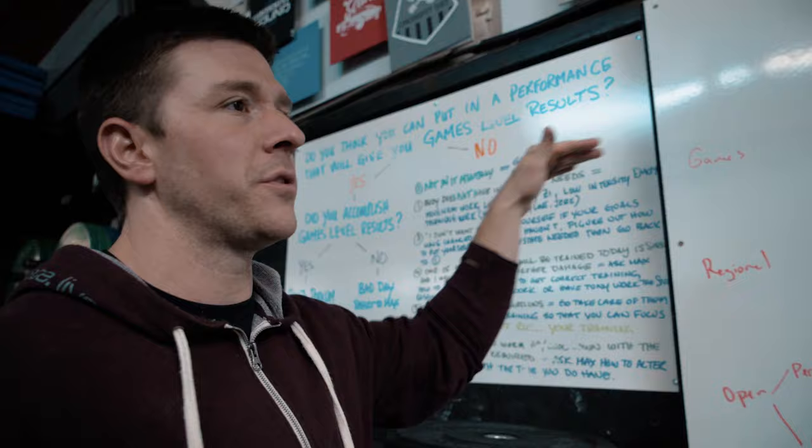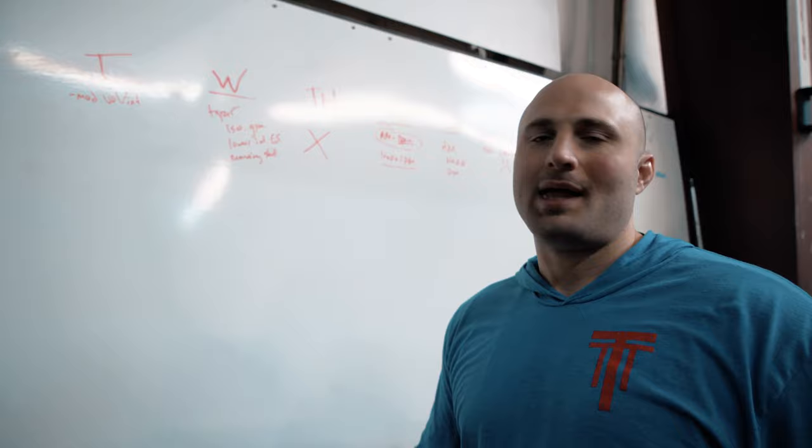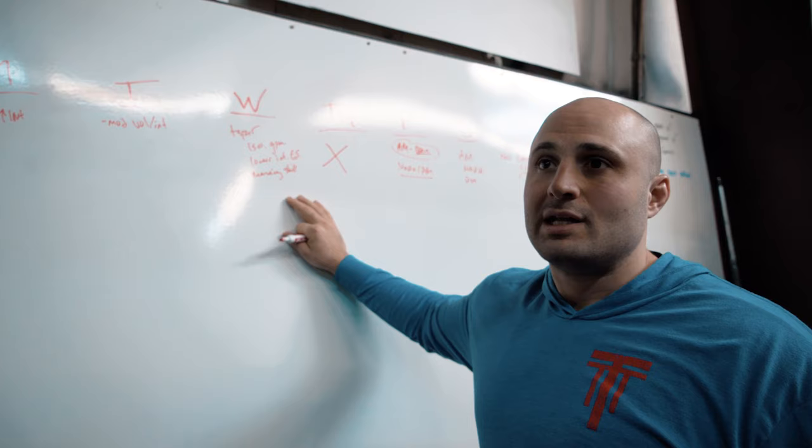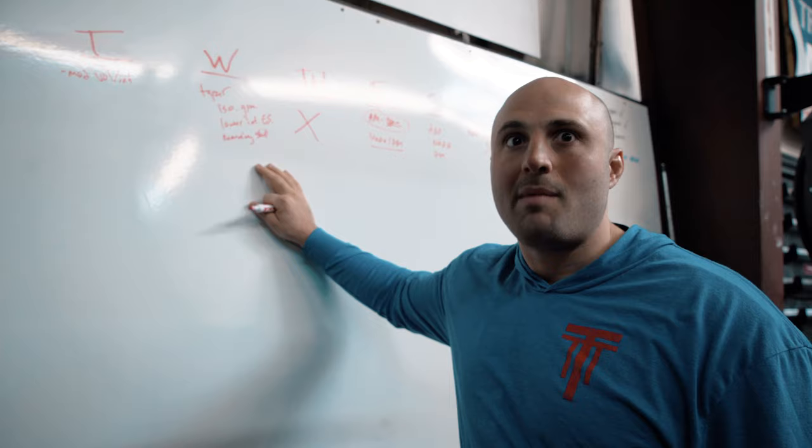Yeah, there's the Mike Tyson quote. Everyone has a plan until they get punched in the face. I apply that to this as well. So what happens if shit goes wrong for a games athlete that you're pretty sure is going to make it? So let's say you get into week three and they're sitting in 22nd place in the region. You're like, oh my God, what happened? Instantaneously, you restructure this. The volume goes lower.